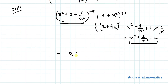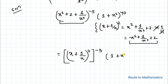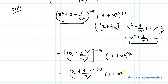So we now have (x + 1/x)² to the power −5, multiplied with (1 + x²) to the power 40. By applying the basic exponential rule, the powers get multiplied, giving us (x + 1/x) to the power −10, multiplied with (1 + x²) to the power 40.